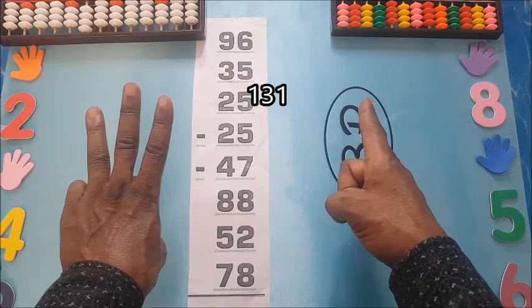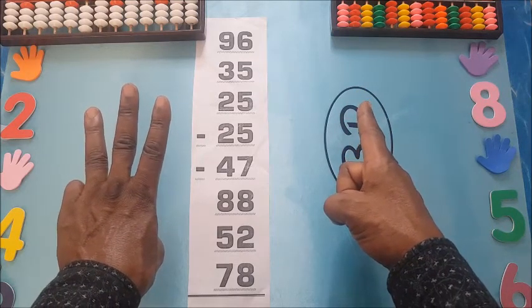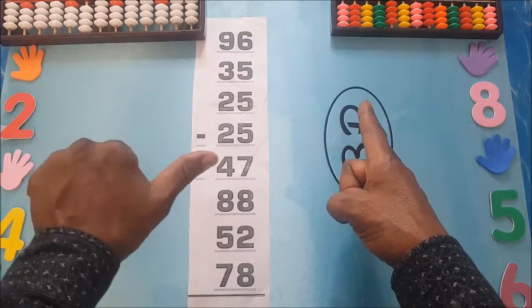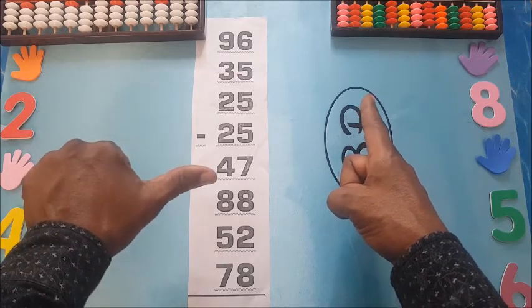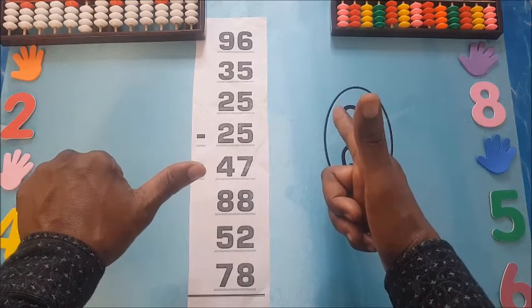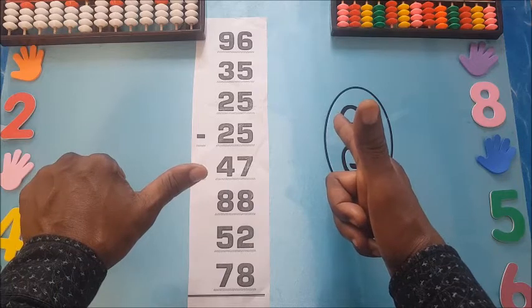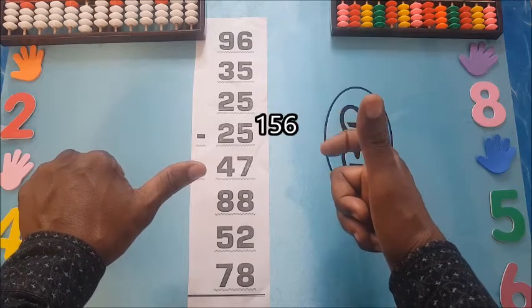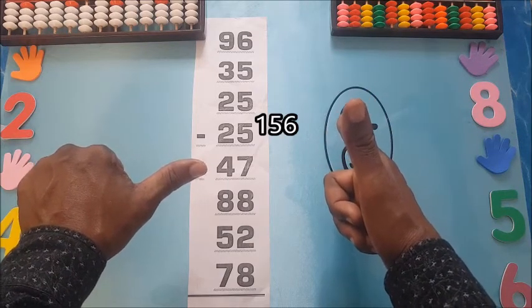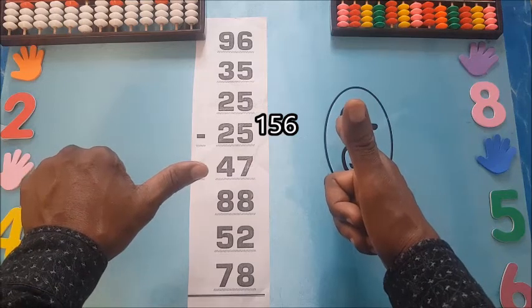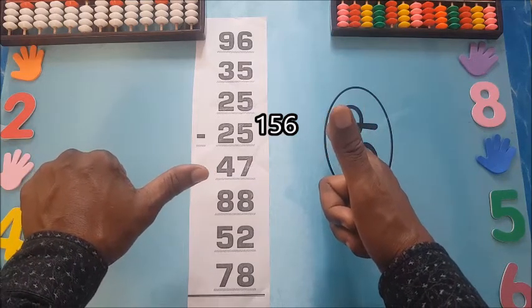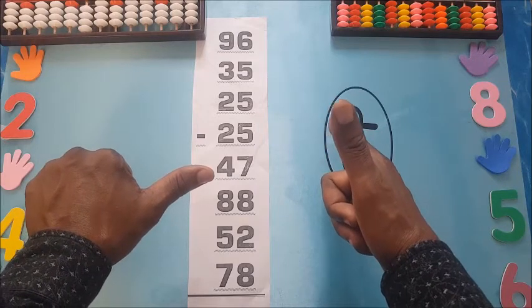131 plus 25: 10, 20, plus 5. I'll shoot up the right hand — 156.